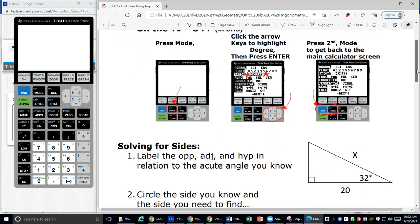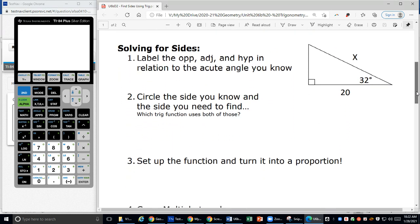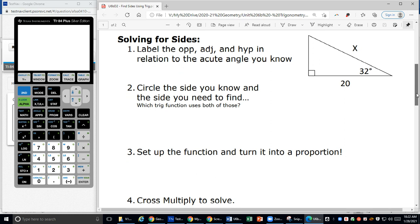When we're going to solve for sides, it is a four-step process. The first step is label the opposite, adjacent, and hypotenuse in relation to the acute angle that you know. It's important that we're doing the acute angle. Then you're going to circle the side that you already know how long it is and the side that you're trying to find, and then identify which trig function uses those sides.